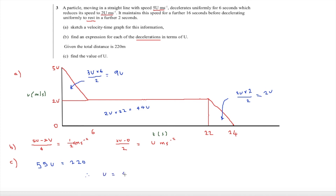We found u = 4 using our knowledge of velocity-time graphs. The main point from today's lesson is that velocity-time graphs and displacement-time graphs have many different features, and we need to learn all of them. Thank you for watching this video — see you soon, bye.